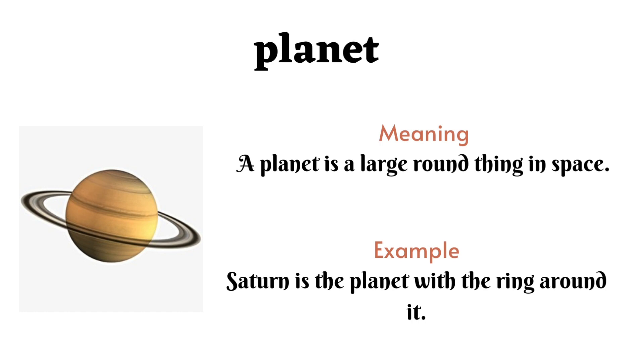A planet is a large round thing in space. Saturn is the planet with the ring around it.